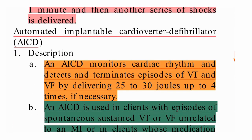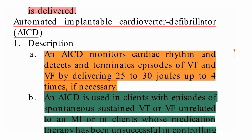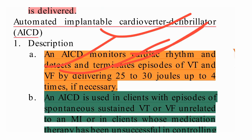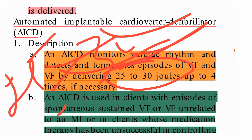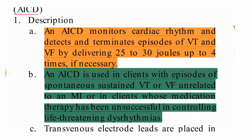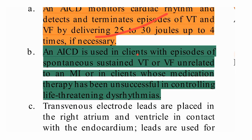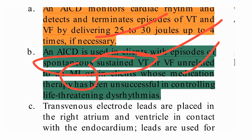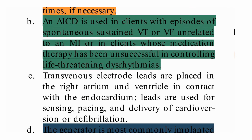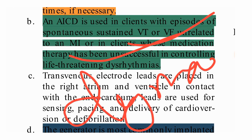The Automated Implantable Cardioverter-Defibrillator (AICD) monitors cardiac rhythm and detects and terminates episodes of VT and VF by delivering 25 to 30 joules, up to four times if necessary. The AICD is used in clients with episodes of spontaneous sustained VT or VF unrelated to MI, or in clients whose antiarrhythmic medication therapy has been unsuccessful.